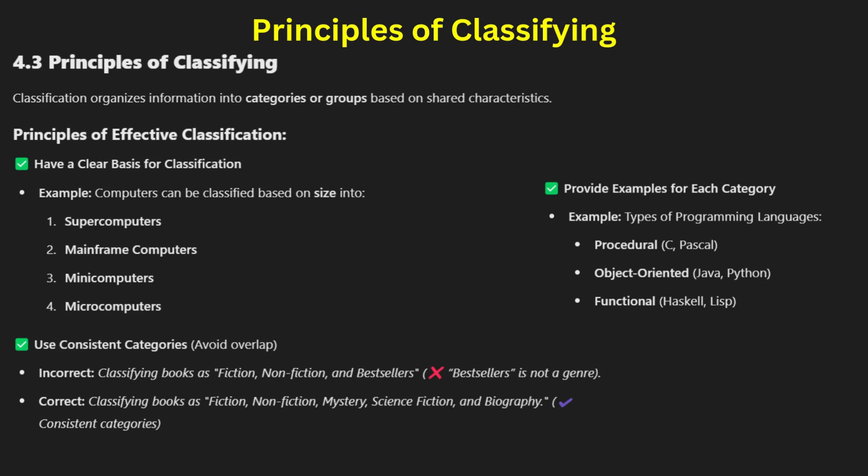For example, programming languages are classified based on procedural, object-oriented, and functional types. Clear classification simplifies complex ideas and enhances comprehension, making it easier for the reader to follow the discussion.